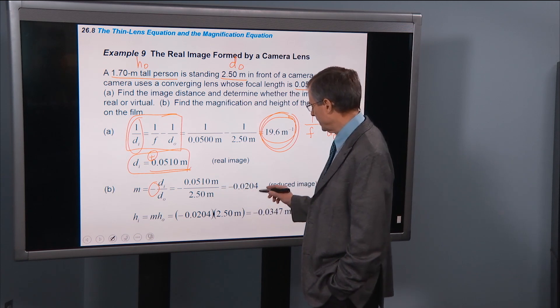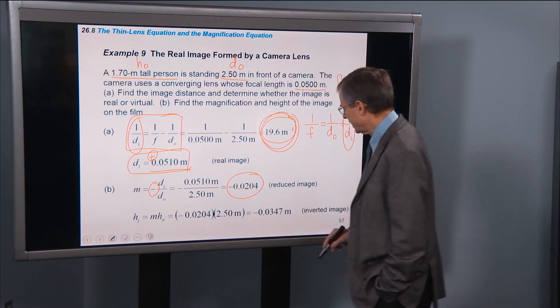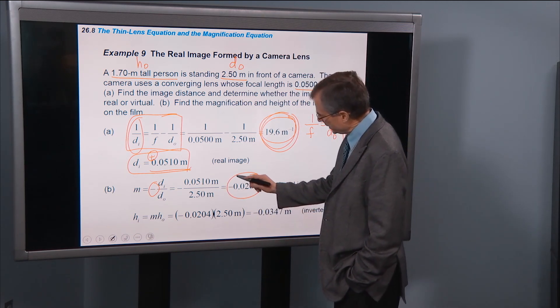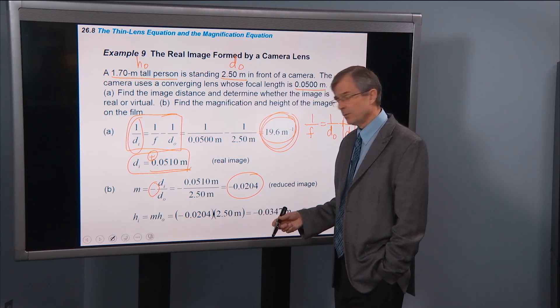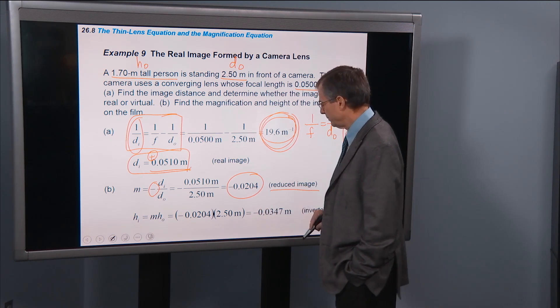plug in the values that we already have, and this gives a magnification. So its magnitude, its absolute value is less than 1. That says that the image is going to be reduced.